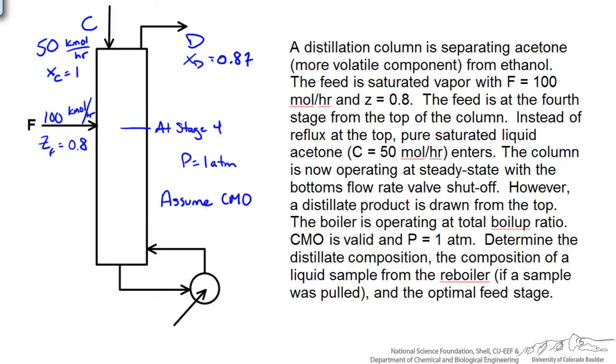The second part of this question asks if we took a sample of liquid from the reboiler, what that composition would be. To do that we would want to determine the operating conditions for our top and bottom sections of our column. We could label this as our top section and bottom section, or the rectifying and stripping sections. We can start doing material balances on these sections to determine the operating lines for McCabe-Thiele analysis.